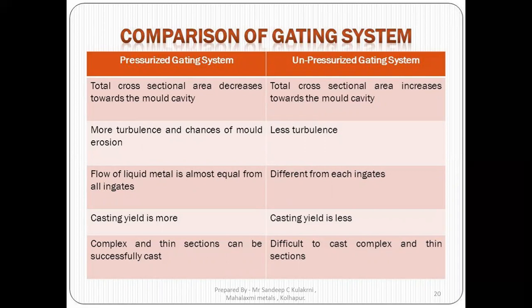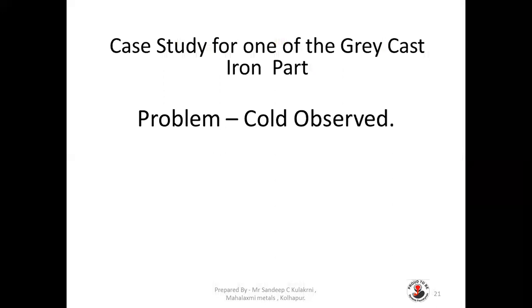Casting yield is more in the pressurized gating system because runner bar and ingate sizes are optimized, whereas casting yield is less in the non-pressurized gating system. Complex and thin sections can be successfully cast in the pressurized gating system, while it is difficult to cast them in the non-pressurized system. Both systems have their own advantages and disadvantages, and the choice depends on casting geometry, box size, and process factors.